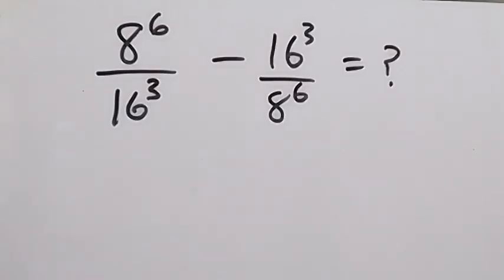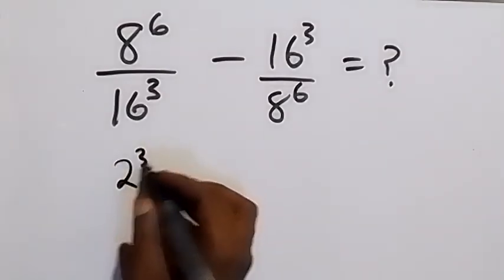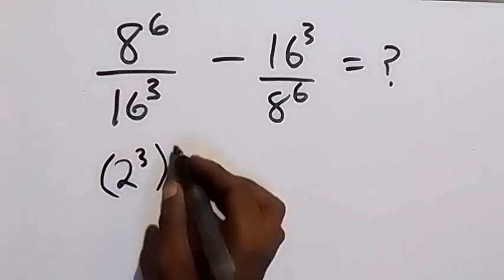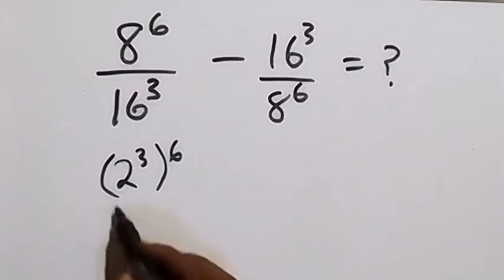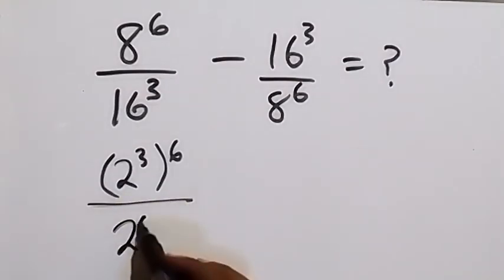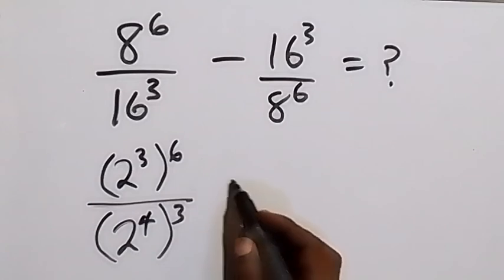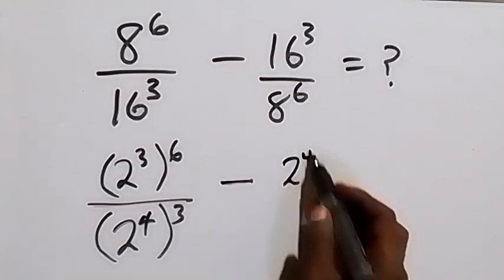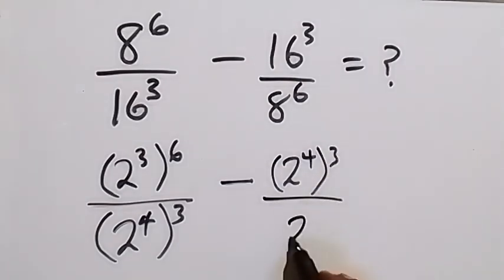Hello, you are welcome. How to solve this problem: here we can change this to base 2. We have 2 raised to power 3, then raised to power 6. This can be written as 2 times 2 times 2, then divided by 2 raised to power 4 raised to power 3 — meaning 2 times 2 times 2 times 2, which is 16.